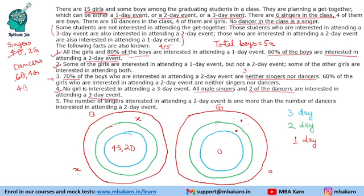What can be concluded about the number of male dancers interested in a one-day event? All regions within the one-day event circle include 5 dancers compulsorily — 3 in two-day and 2 in three-day — plus possibly a sixth, so the answer is 5 or 6. How many female dancers are interested in a two-day event? The two-day event region has no female dancers, so the answer is zero. This completes the solution to the set.